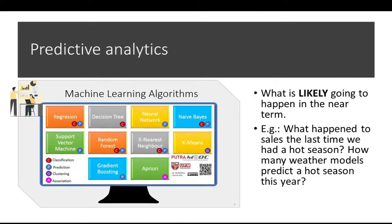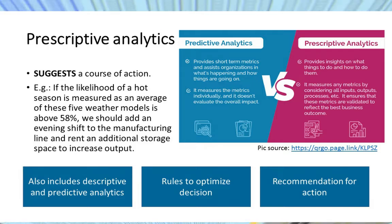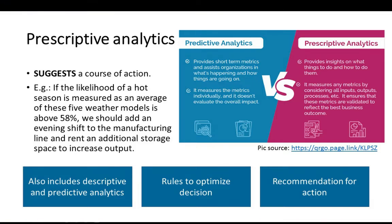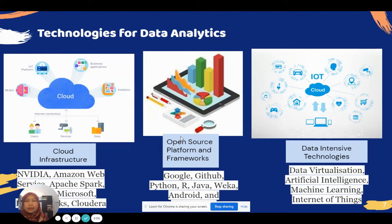Predictive analytics allows you to identify what rules or actions apply given that a certain event is likely to happen. Prescriptive analytics then prescribes the suitable action to intervene or to prevent something from happening, depending on the predicted outcome.